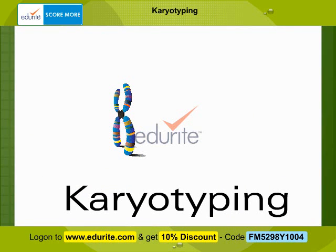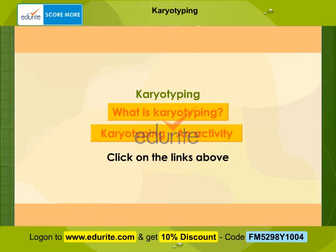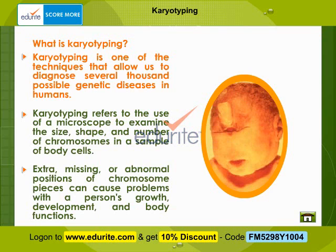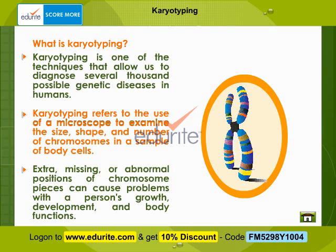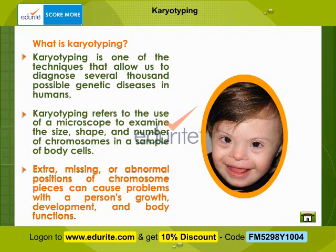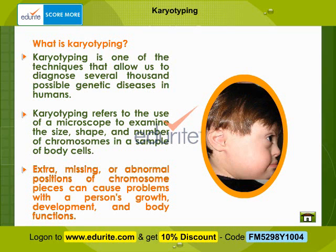Karyotyping is one of the techniques that allow us to diagnose several thousand possible genetic diseases in humans. Karyotyping refers to the use of a microscope to examine the size, shape and number of chromosomes in a sample of body cells. Extra, missing or abnormal positions of chromosome pieces can cause problems with a person's growth, development and body functions.